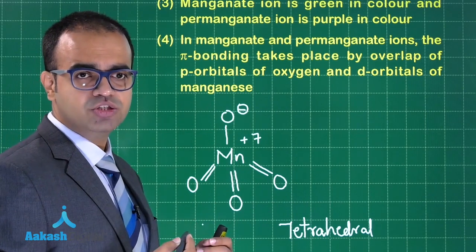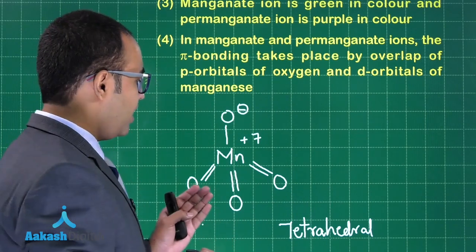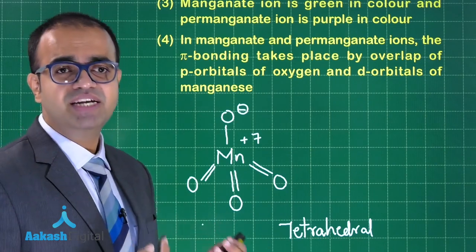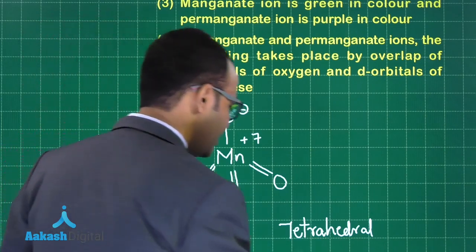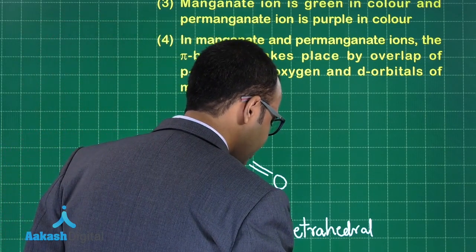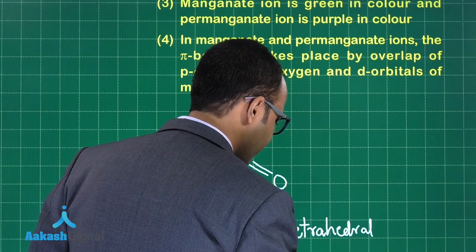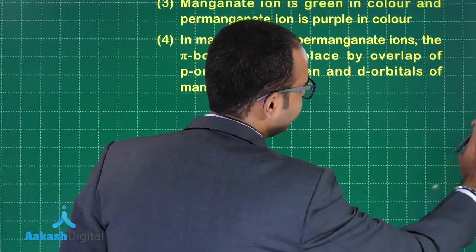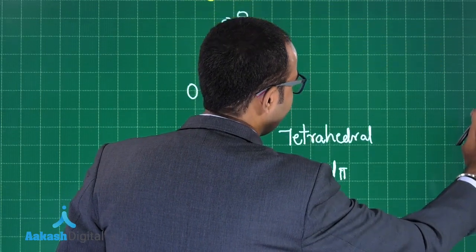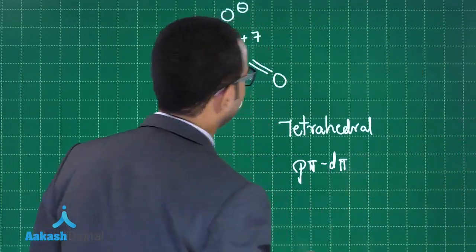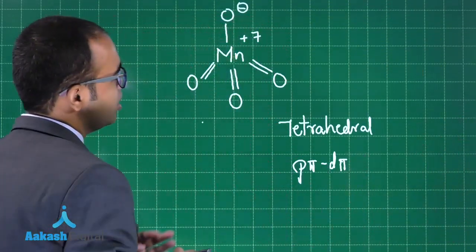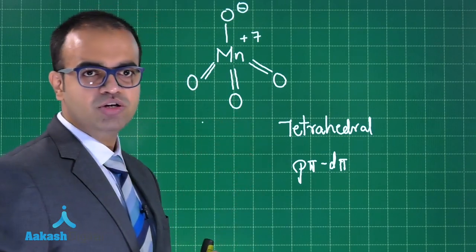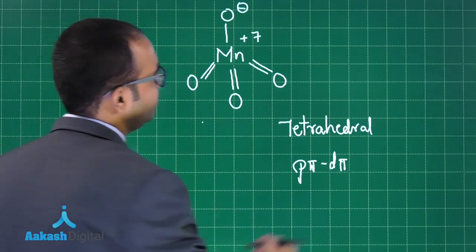Does Mn have P orbitals to form pi bonds? Oxygen has P orbitals and Mn has empty D orbitals. So here we have Pπ-Dπ bonds. Oxidation state, tetrahedral structure, and Pπ-Dπ bonds are clear.